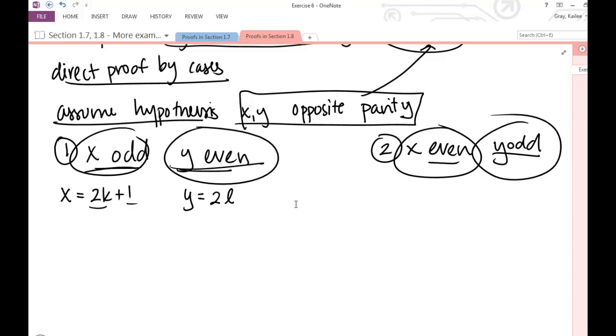And so now we want to look at 5x plus 5y, because we're trying to show this is odd. So we're trying to show that we can rewrite this expression as 2 times some integer plus 1. So let's go ahead and look at what happens if I plug in 2k plus 1 and if I plug in my 2l. So I'm just rewriting x and y using their representations based on their parity.